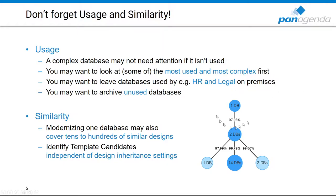On the right-hand side you see a database cluster with a total of 20 databases — none with 100% identical design, but similar enough that once you've modernized one, all of them are essentially covered and only require some fine-tuning on the delta. Similarity also allows you to identify template candidates independent of design inheritance settings. So no matter whether databases have a template set or are set to be a template, we detect how your template and design inheritance is actually configured, then suggest template candidates to you.